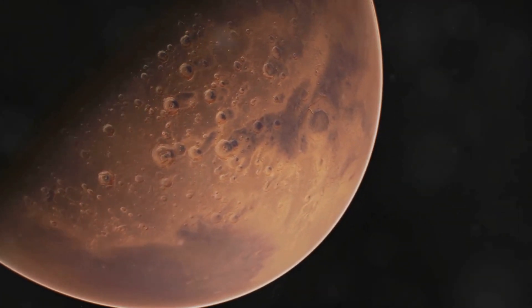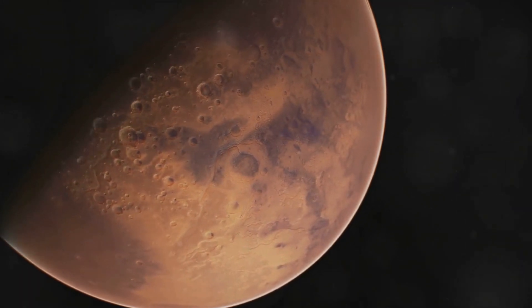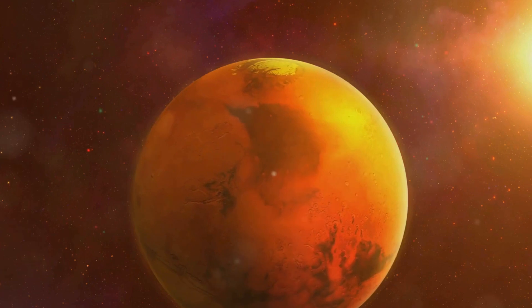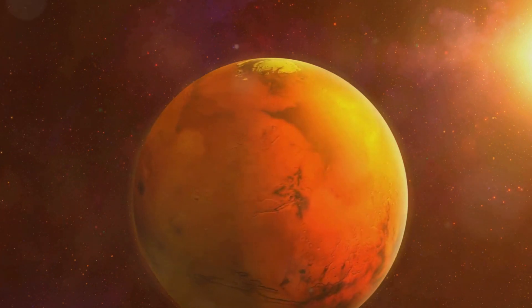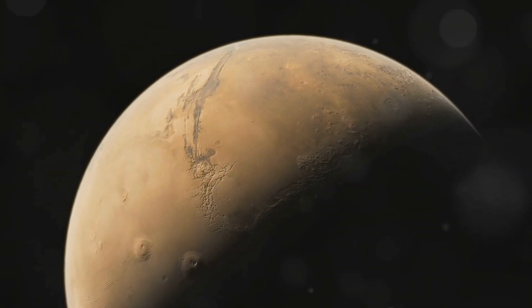On the flip side, Deimos, being further away and slower, can take up to two minutes for its transit across the sun. There's another fascinating aspect of Martian eclipses: the frequency. On Earth, we consider ourselves lucky to witness a solar eclipse every 18 months or so.